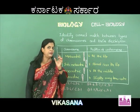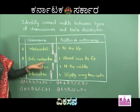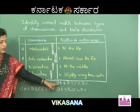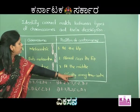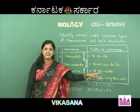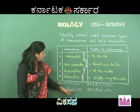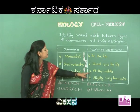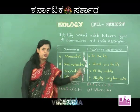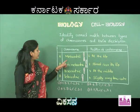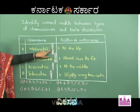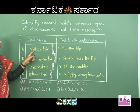B2-3: sub-metacentric matched to description 3 which is at the middle - sub-metacentric is not at the middle, so that is wrong. Moving to option C - A is metacentric, matched to description 3 which is at the middle. This is right - metacentric centromere is equal, centrally located, so metacentric with description 3 is correct. Next, B2-4: B is sub-metacentric, 4 is slightly away from the center. The name itself tells you - sub-meta means not fully central, so it is slightly away from the center. This is right.